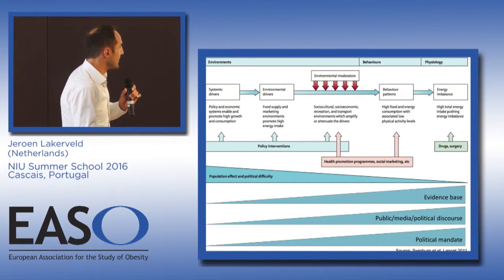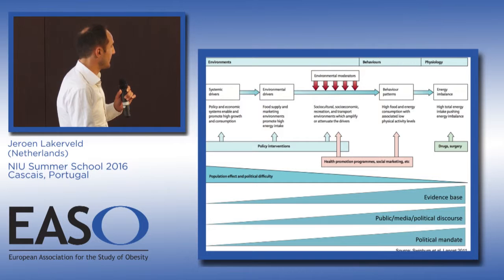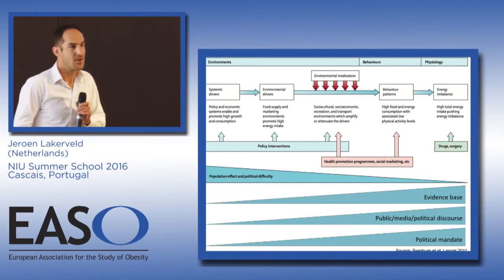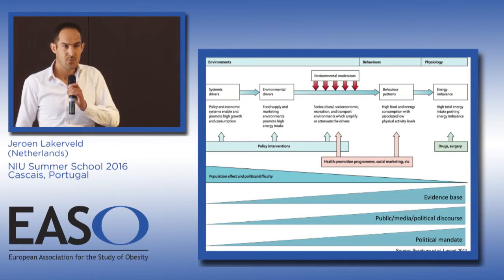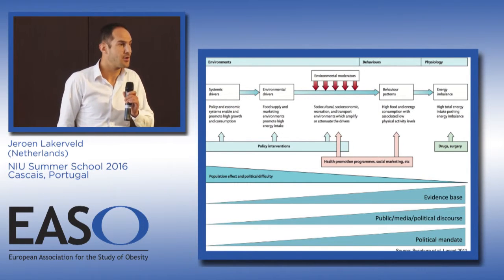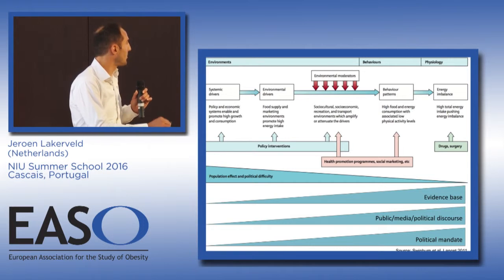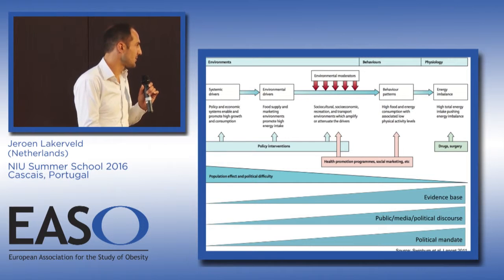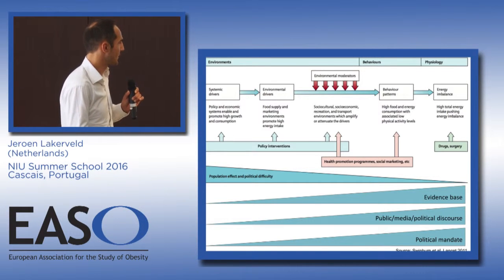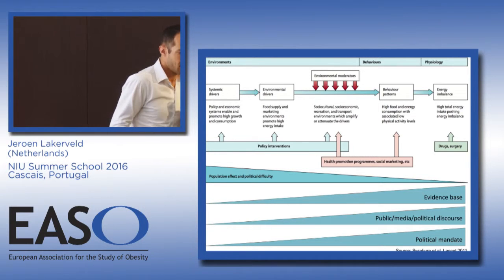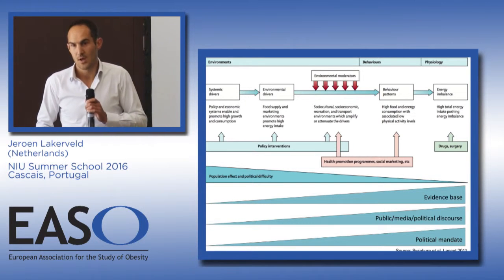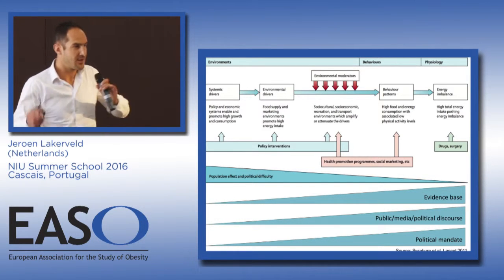Evidence-based approaches usually skew toward the right — with RCTs and placebos, we can follow people up and provide evidence. So if you look for evidence-based interventions, you will end up somewhere on the right. Public and media discourse also usually skews toward the right, as does political mandate.